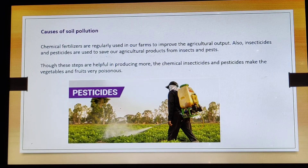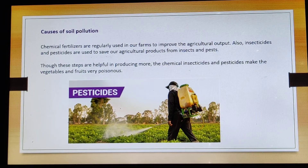Though these steps are helpful in producing more, the chemical insecticides and pesticides make the vegetables and fruits very poisonous. These are poisons which kill the insects, so when the moment these come in contact with the plants, of course the insects get killed.